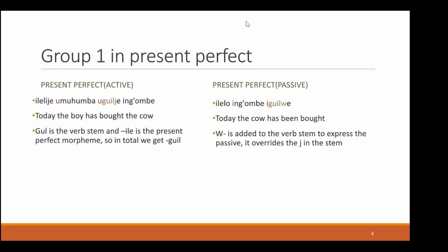In comparison, we have the present perfect. Here the W is added to the verb stem to express the passive. In the passive form, this overrides the J in the stem.